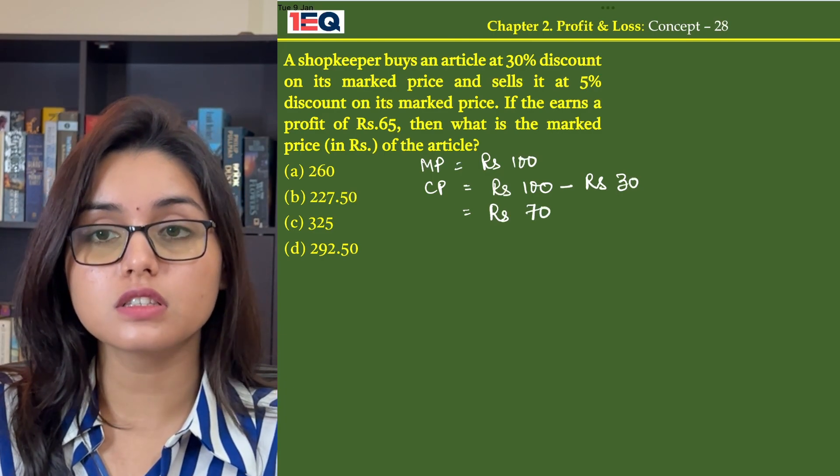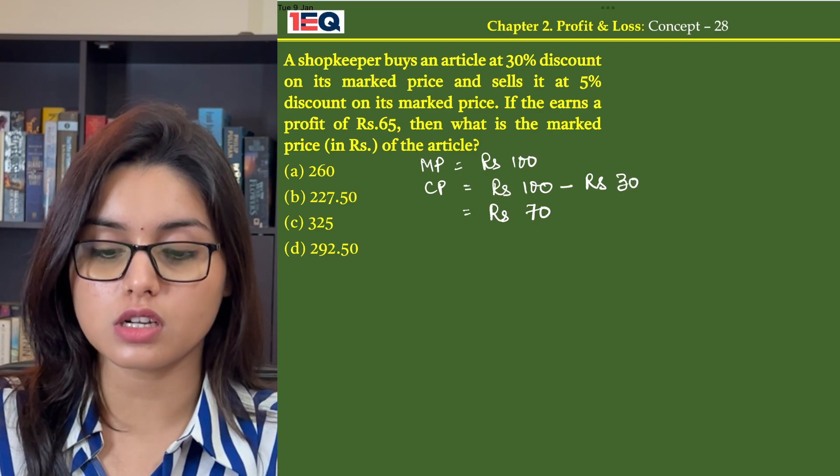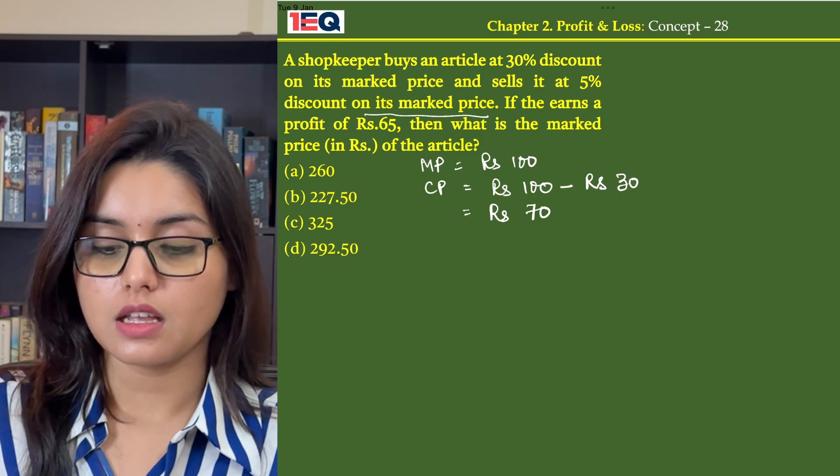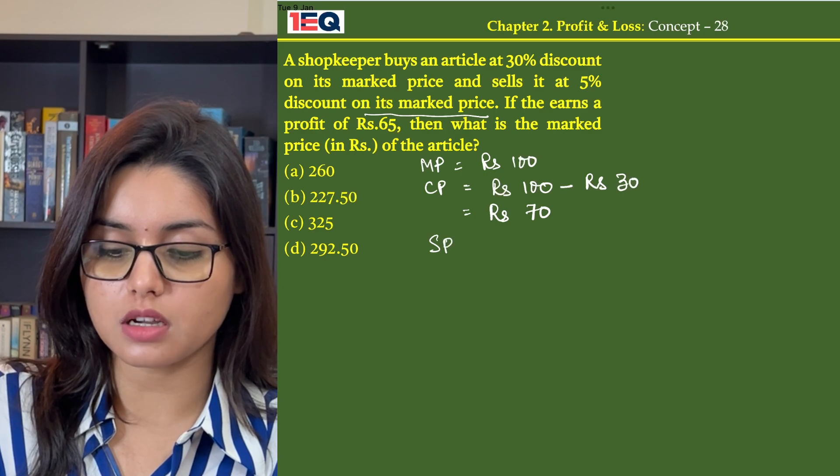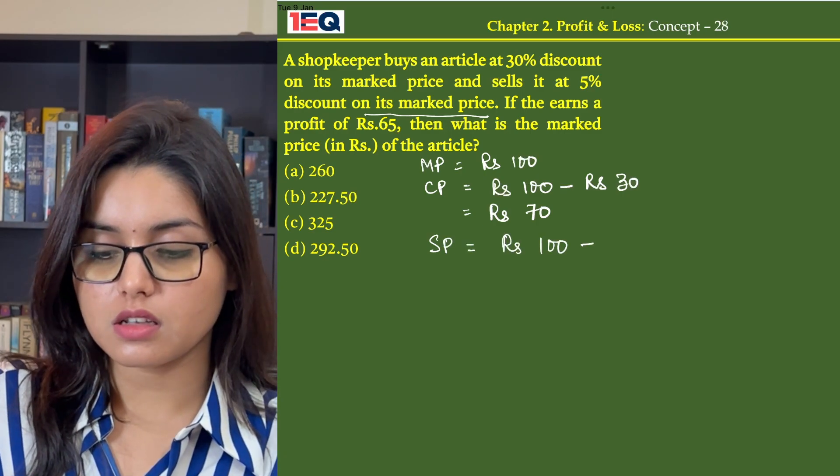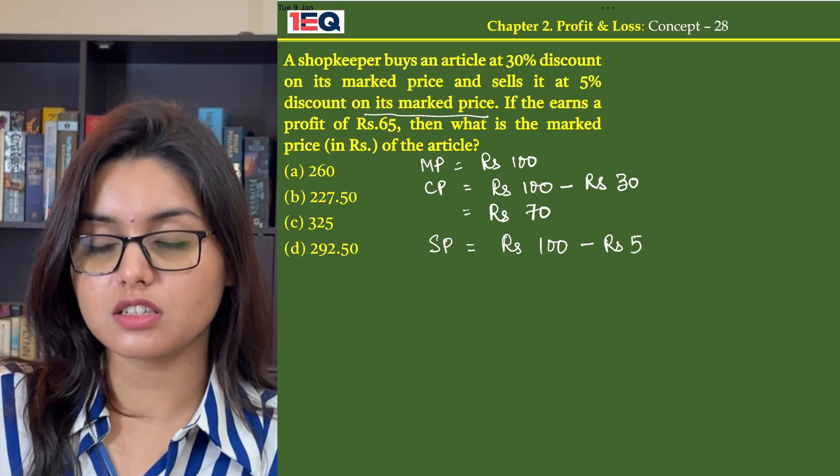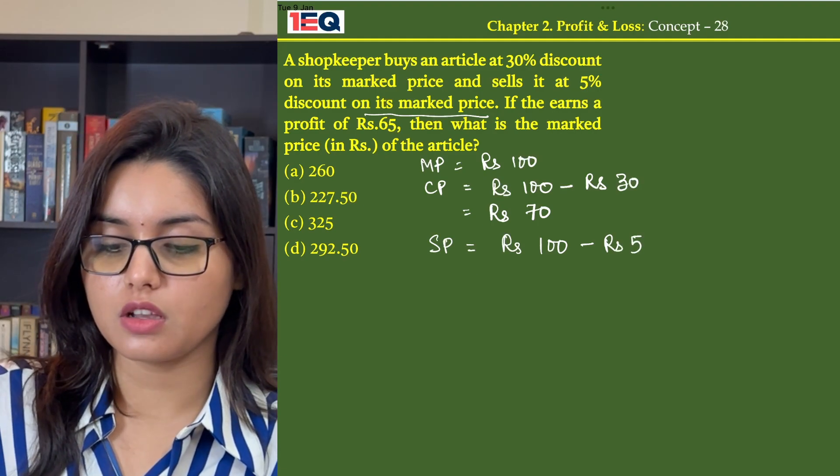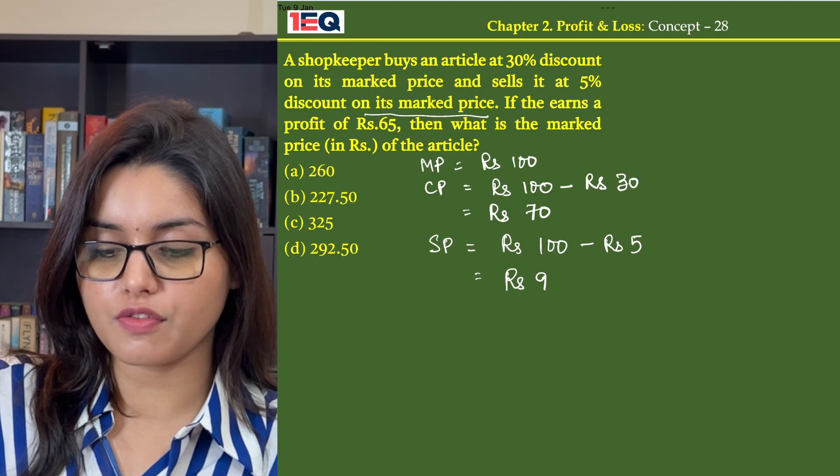Now he further sells the article at 5% discount on its market price. That means his selling price becomes Rs. 100 minus Rs. 5, that is 5% of 100, which is Rs. 95.